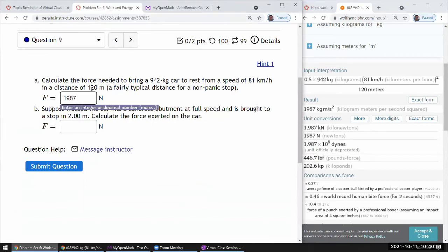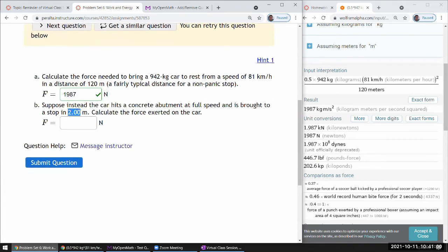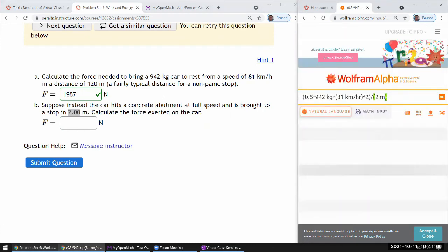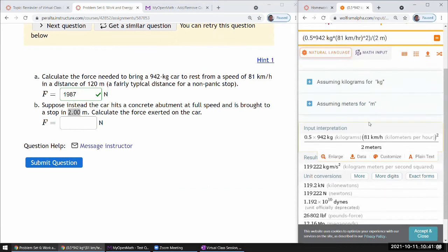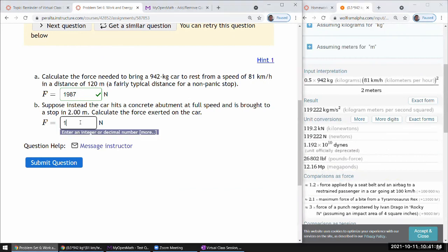1980, and I guess technically it should be negative force and it's in the opposite direction, but I don't think they are looking for the directional force. So yeah, and if it's in two meters, then it's going to be a more extreme value of, I guess, 1.19 times 10 to the power of 5.